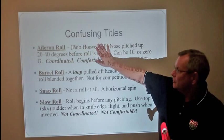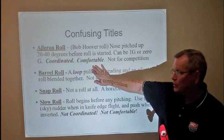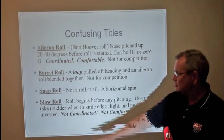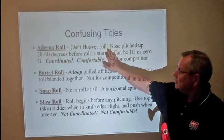The confusing part in aerobatic competition is that the Bob Hoover smooth 1G aileron roll doesn't exist in competition, and neither does the barrel roll. But the snap roll and the slow roll do, and the confusing thing we do in competition is that what's called the aileron roll is really the slow roll.